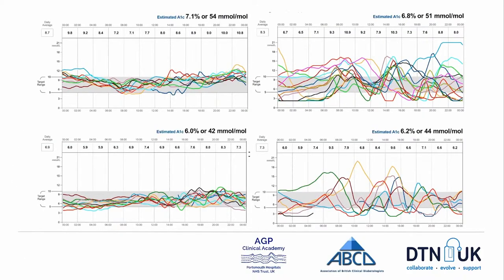In this panel we have four individuals and their glucose profiles over a two-week period collected with the Freestyle Libre sensor. Each pair — the top pair and the bottom pair — have got a similar haemoglobin A1c, but we can see that the overall glucose experience of the individuals represented by each panel is really very different. Those on the left-hand side show clearly much less glucose variability from one day to the next than do those on the right. And although their average of control is the same, it's clear that we would choose those with the least variability.